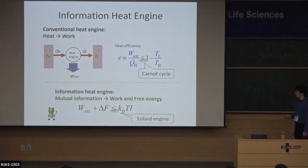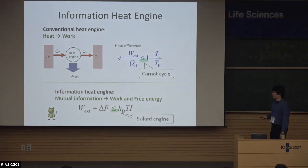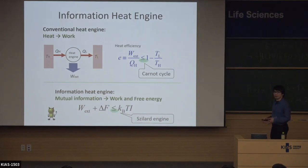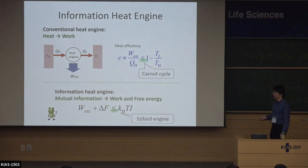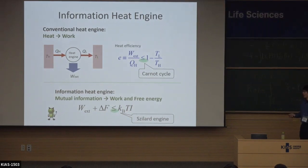The upper bound of the conversion rate is achieved by the Szilard engine. In this case, the work is given by kT log 2, and delta F is zero because it's just cyclic. I is log 2 because in the case of the Szilard engine there is no measurement error, and the mutual information is log 2. So the right-hand side is given by kT log 2, and also the left-hand side is kT log 2. In that sense, the Szilard engine achieves the equality in this inequality.